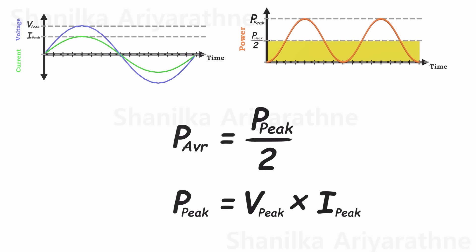Furthermore, the peak power equals the product of the peak voltage and the peak current. This relationship is crucial for understanding and calculating power in alternating current circuits.